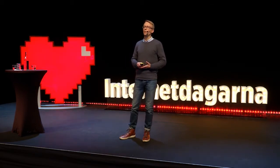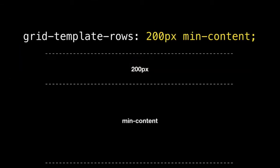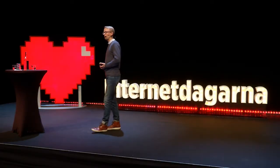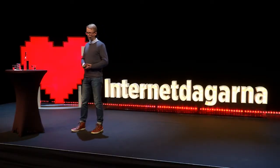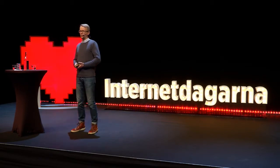So here I'm creating a 200-pixel header row, and then the rest is allocated to whatever the content needs as a minimum. There's also a max-content keyword, and there are loads more of these keywords in CSS Grid. It means we get a lot of flexibility in defining rows and columns.